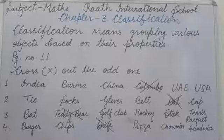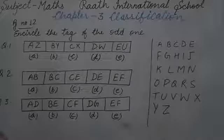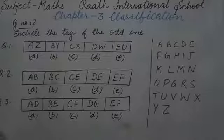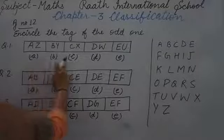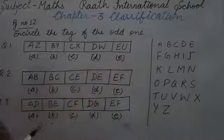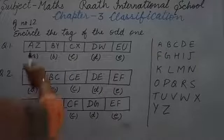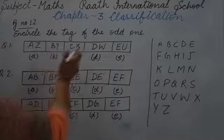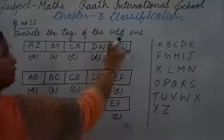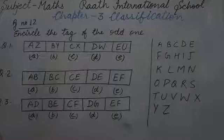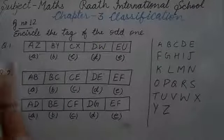Now we will do the next page, page number 12. Circle the tag of the odd one. A, B, C, D are the tags — circle that tag. So in question 1, there are alphabets given with tags A, B, C, D, and we have to identify the odd one and circle its tag.